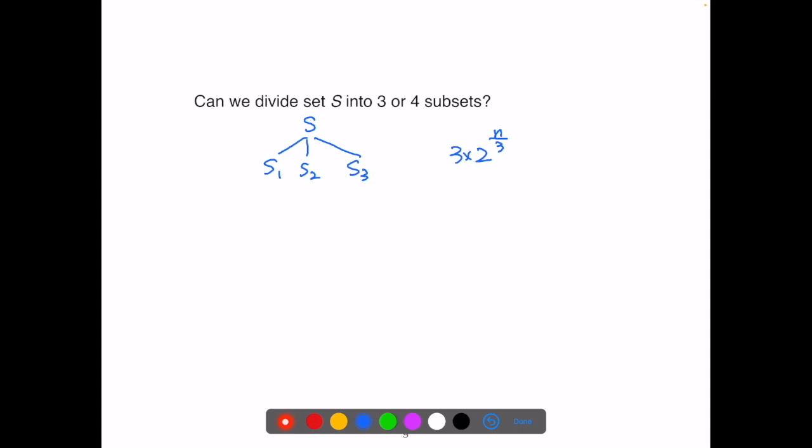We could have part of them in S1, part of them in S2, part of them in S3. So we'll have to consider all these combinations, and that will actually add complexity to this. So overall complexity won't improve that much. The same idea for dividing S into four subsets. They do not really improve the time efficiency of the algorithm.